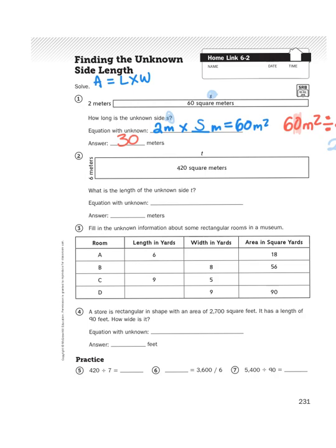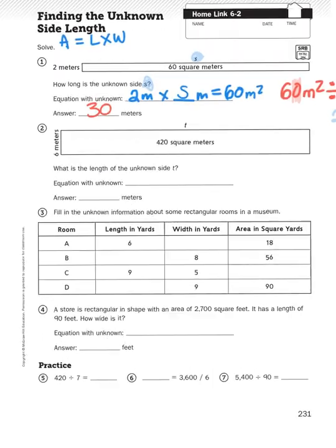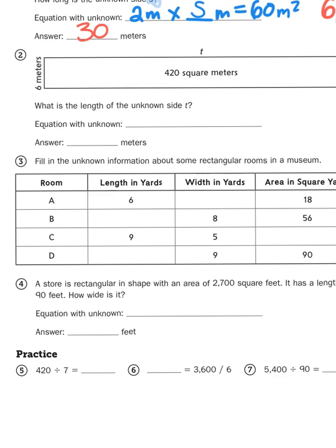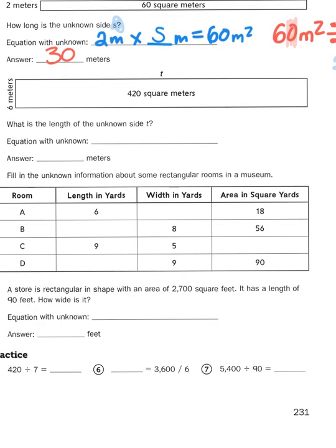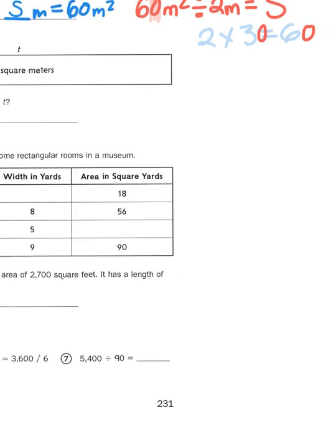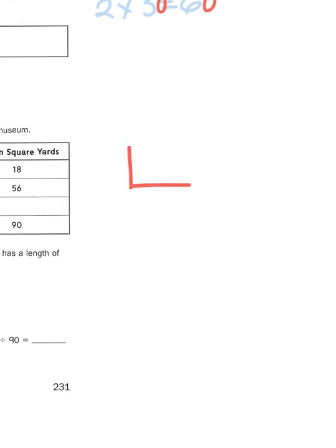Let's try another problem. Let's take a look at the table for number 3. It says fill in the unknown information about some rectangular rooms in a museum. We're given a table that has length, width, and area. We just have to apply the area formula for rectangles to find the missing number. I know that the length of this rectangle is 6, I don't know the width, I know the total area is 18. So if I draw a little model, if this is 6 and the total area is 18 yards square, I just need to figure out my missing width.